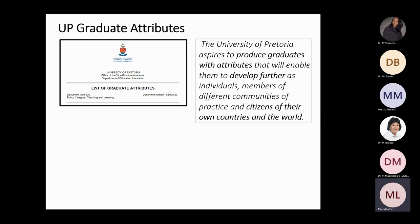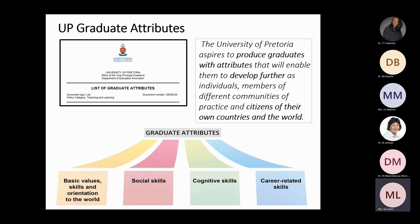UP aspires to produce graduates with attributes that will enable them to develop further as individuals, members of different communities of practice, and citizens of their own countries and the world. The UP graduate attributes are divided into four streams, which are part of the curriculum development policy: basic values, skills and orientation to the world.